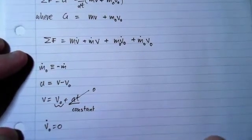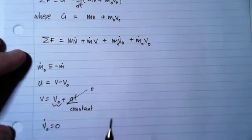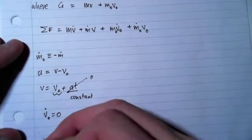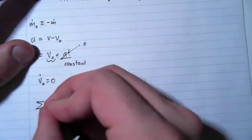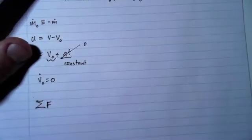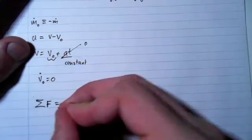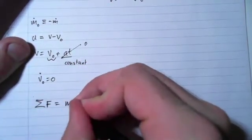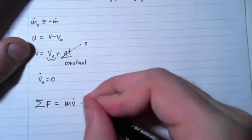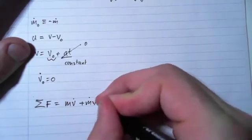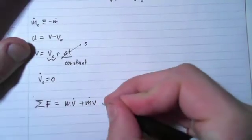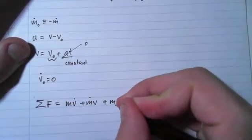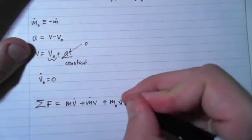So looking back at our force summation, we end up getting this equation here, which is the sum of the forces equals mv dot plus m dot v. And since v, we'll write the whole thing out and then we'll cancel out terms where necessary.